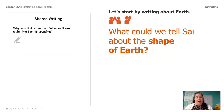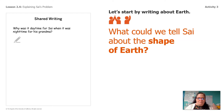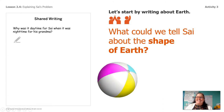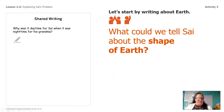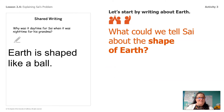I get to put my glasses on for this part because it's time for us to write to Psy about the reason why it was nighttime for his grandma when it was daytime for him. Let's write together — you guys tell me what to write and I'll write it down. So first of all, what could we tell Psy about the shape of the earth? The earth is round like a ball. Let's go ahead and write that. Earth is shaped like a ball.